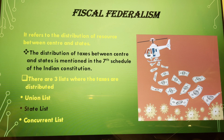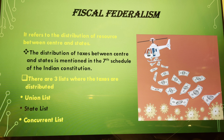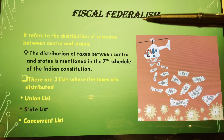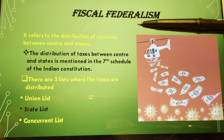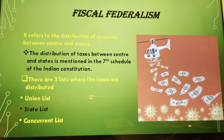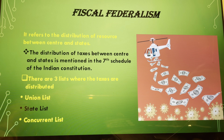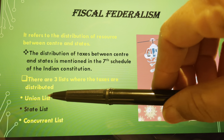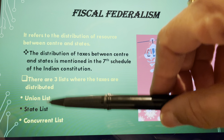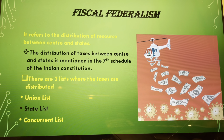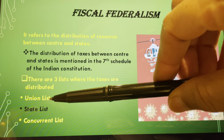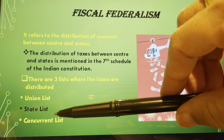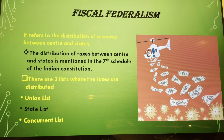Fiscal federalism refers to the distribution of resources between the centre and states. The distribution of taxes between centre and states is mentioned in the Seventh Schedule of the Indian Constitution, which contains three lists: the Union List (centre government), the State List (state governments), and the Concurrent List (both centre and state are independent of each other).